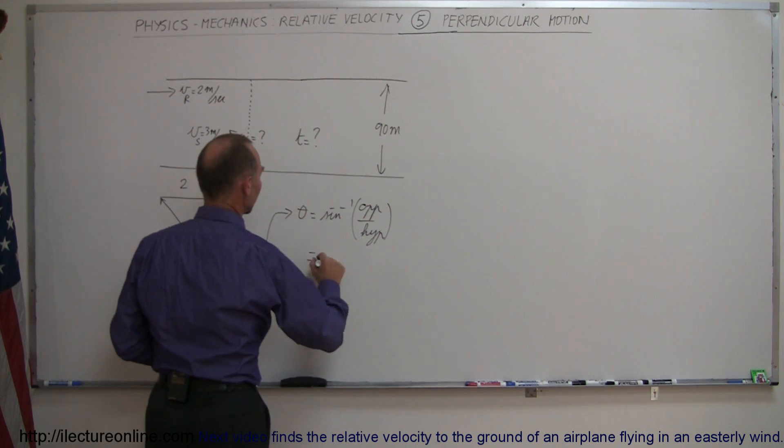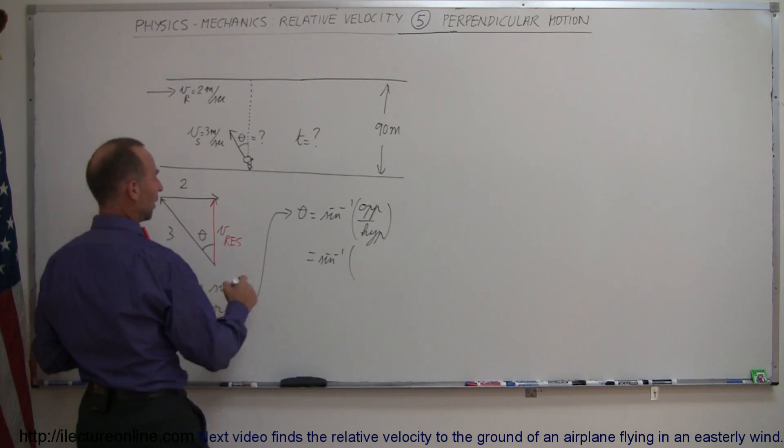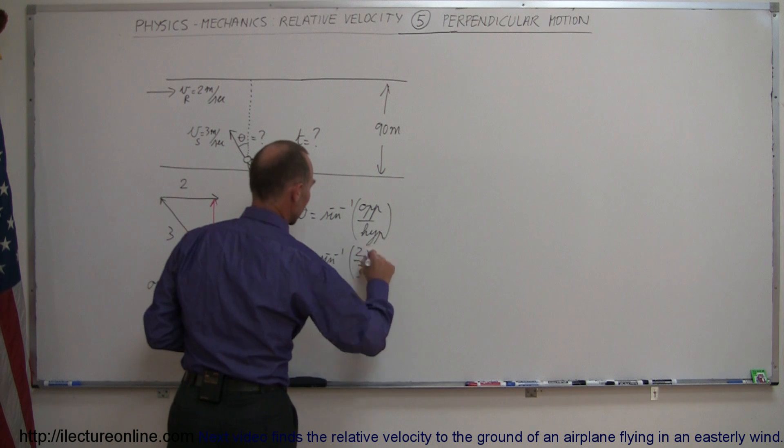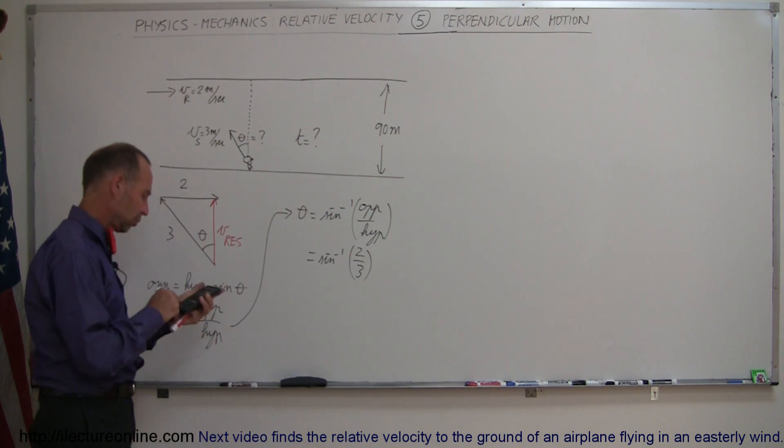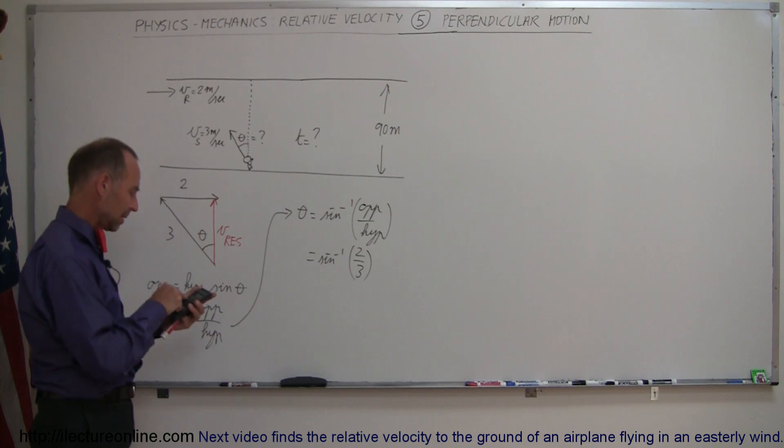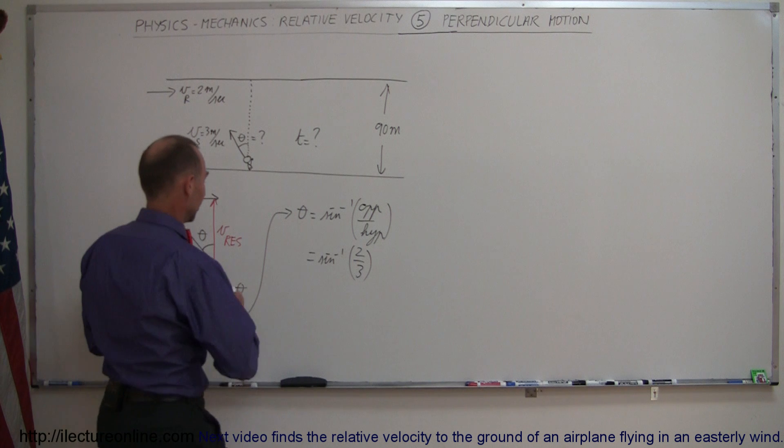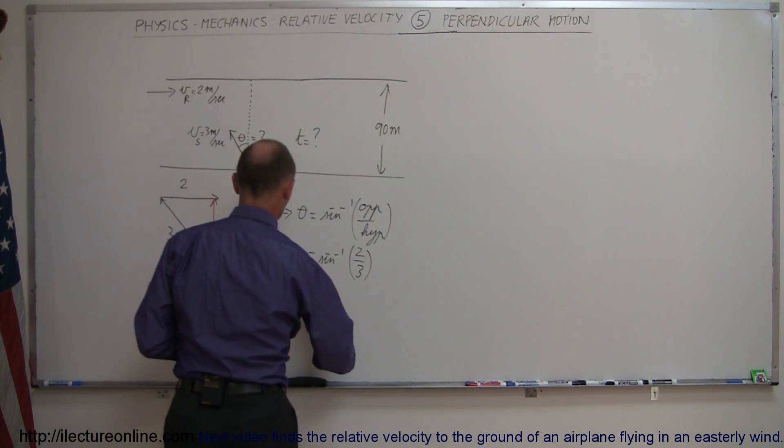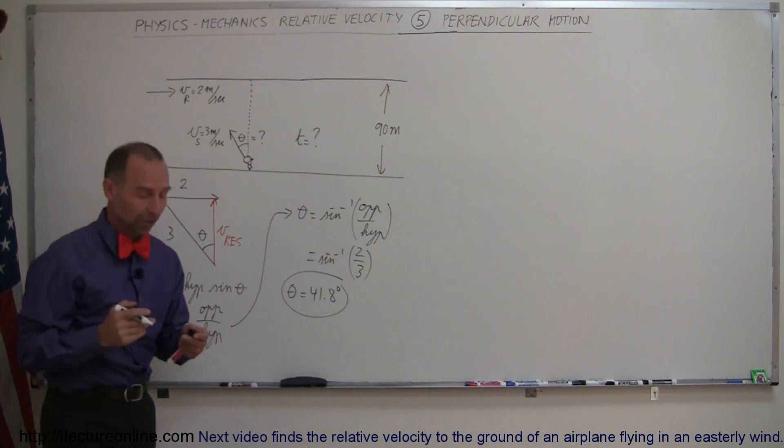Which means that's equal to the arc sine of, when we plug in the numbers, opposite side to the angle would be 2, hypotenuse would be 3. And what is the arc sine of 2 thirds? So we have 2 divided by 3, take the arc sine of that, and it's 41.8 degrees. So the swimmer would have to swim at an angle of 41.8 degrees in order to hit the point directly across the river when he gets to the other side.